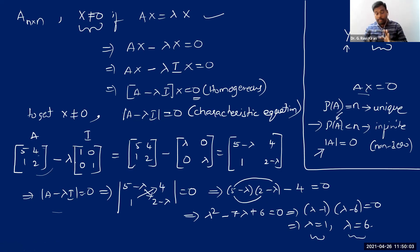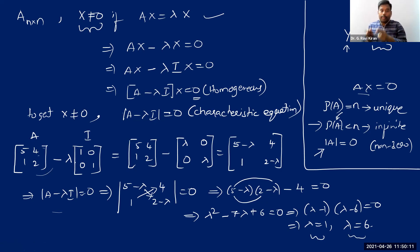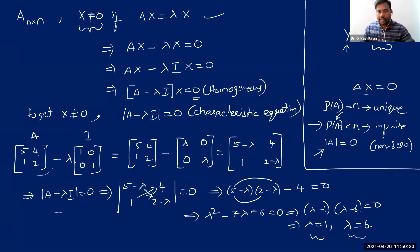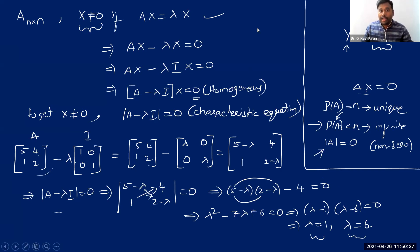Corresponding to these two eigenvalues, we get two different eigenvectors. When a second-order matrix gives two eigenvalues, we get two different eigenvectors. Similarly, a three-by-three matrix gives three eigenvalues and three eigenvectors. In the next class, let us take an example and see how to find eigenvalues and their corresponding eigenvectors.